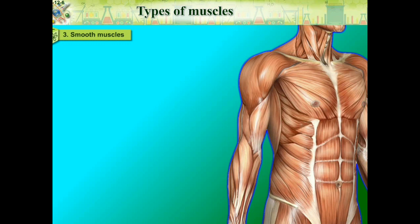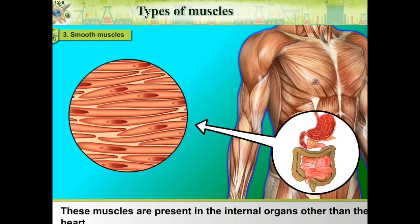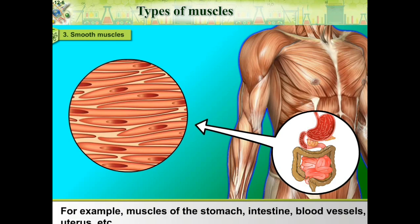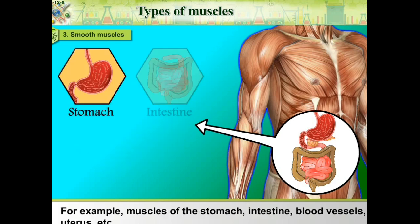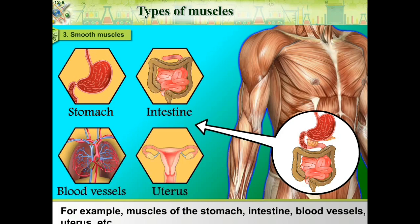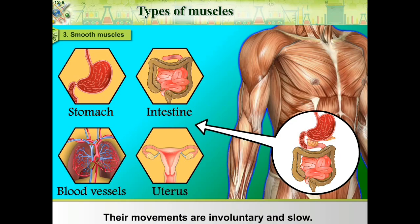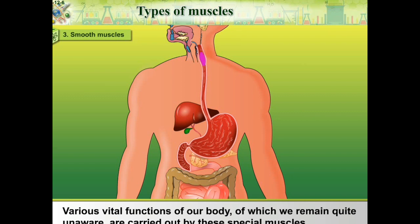Smooth Muscles: These muscles are present in the internal organs other than the heart — for example, muscles of the stomach, intestine, blood vessels, uterus, etc. Their movements are involuntary and slow. Various vital functions of our body, of which we remain quite unaware, are carried out by these special muscles.